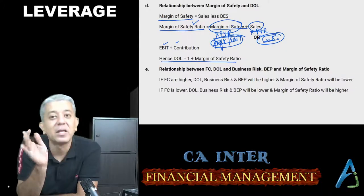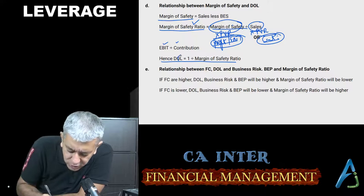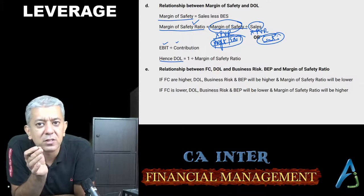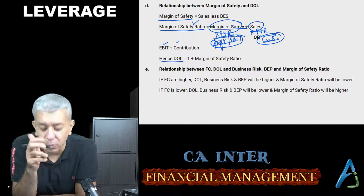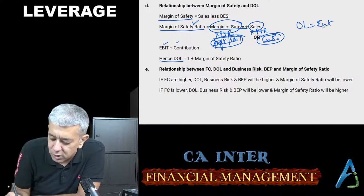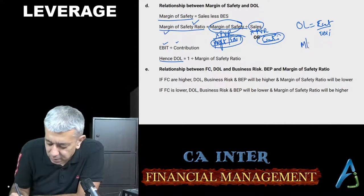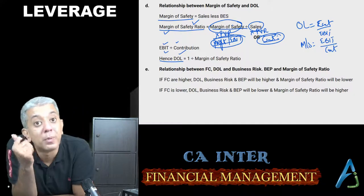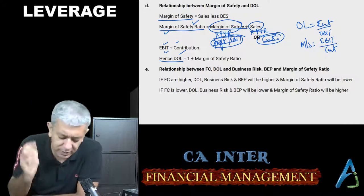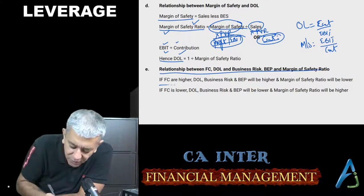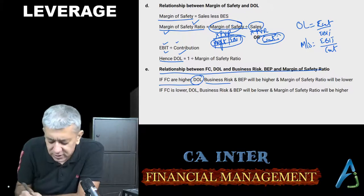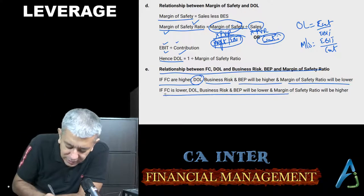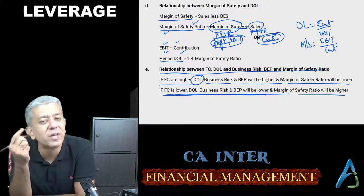Operating leverage shortcut formula is contribution upon EBIT, and margin of safety ratio is EBIT upon contribution — both are reciprocals of each other. Therefore, degree of operating leverage (DOL) equals 1 divided by margin of safety ratio. Conclusion: if fixed costs are higher, DOL will be higher, business risk will be higher, break-even point will be higher, and margin of safety will be lower. Vice versa is also true — if fixed costs are lower, margin of safety ratio will be higher.